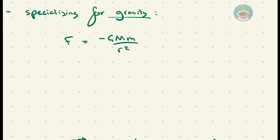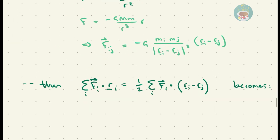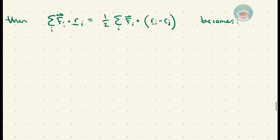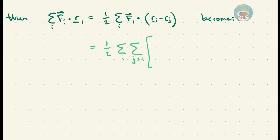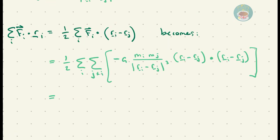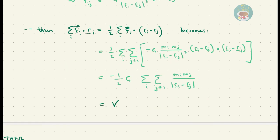Tailoring the force to be gravitational in nature, we rewrite it in a slightly odd format. Then, this overall term of i summed force dot distance becomes such, which we call v, the total potential energy.